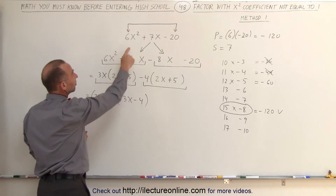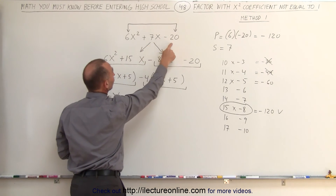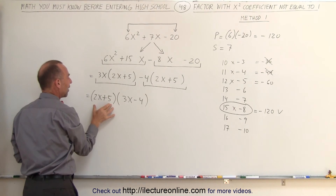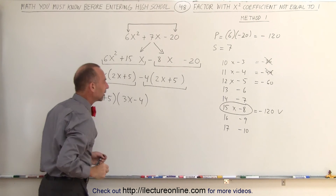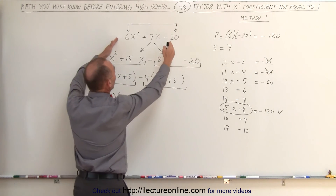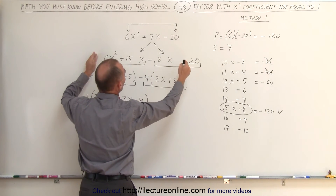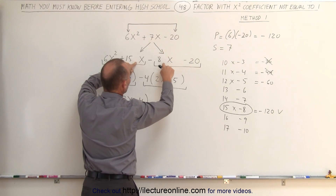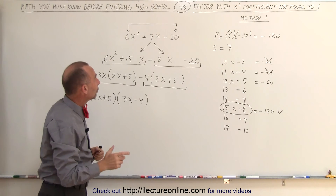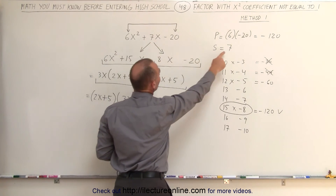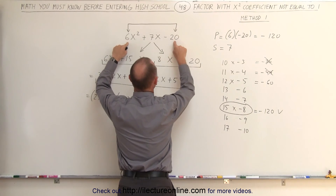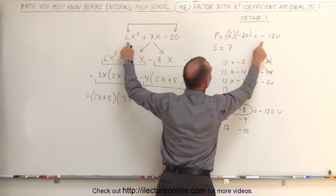In other words, the original problem — 6x-squared plus 7x minus 20 — can be factored into the quantity 2x plus 5 times the quantity 3x minus 4. The technique is to rewrite this trinomial as a polynomial with four terms, where the middle term is written as a sum of two middle terms. The product of the two new coefficients must equal the product of the first and last coefficients — in this case, minus 120.